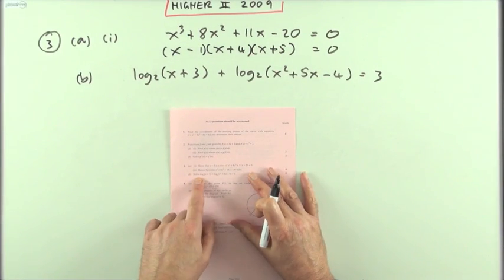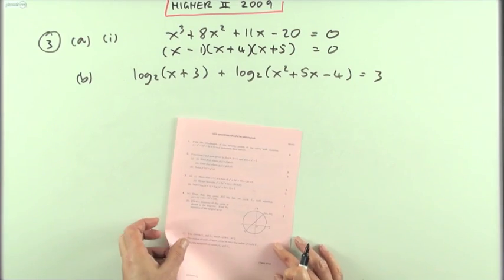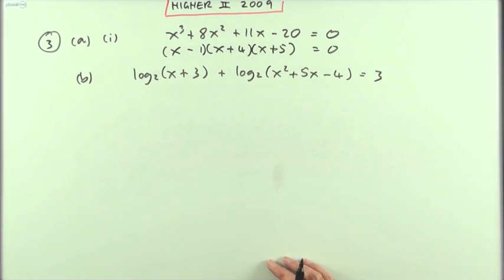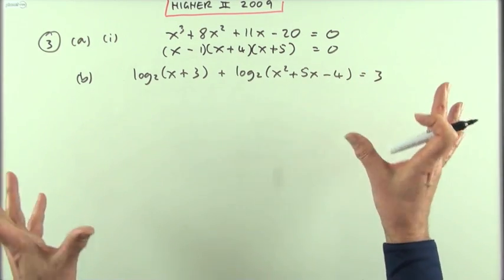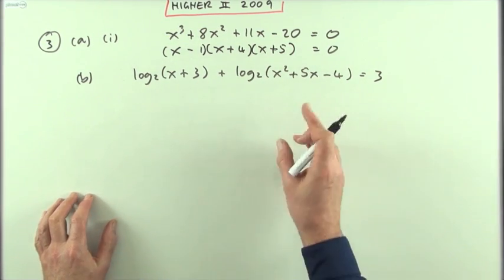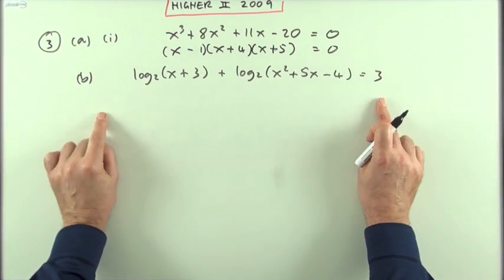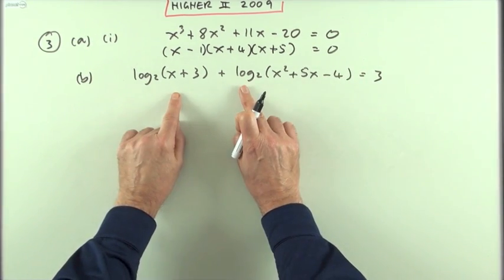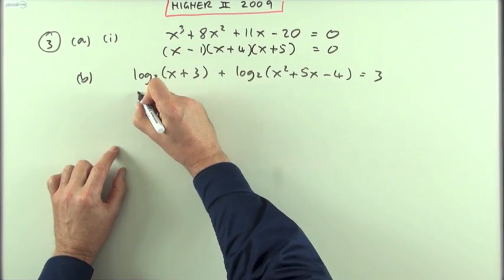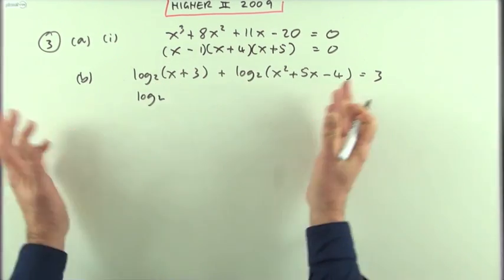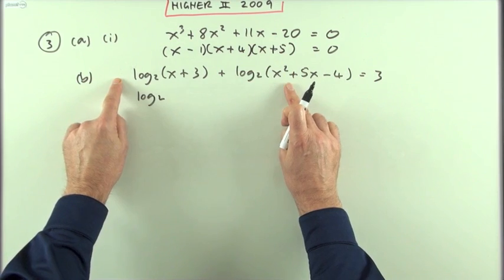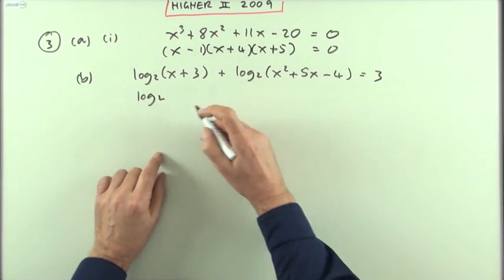Now for part B, solve this log equation in the same question. You must be thinking there must be some connection, otherwise why mix these two totally different things together. Well, forgetting the first part and just taking this on its own merit, there are two logs being added, so you can use the laws of logarithms to reduce it to a single term. If you're adding logarithms, it'll be the single logarithm of the product.